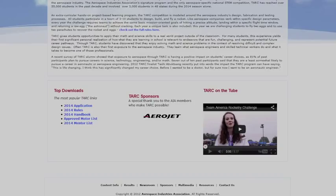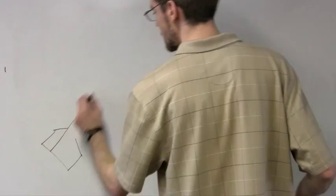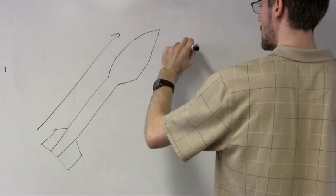Most large model rockets, including egg lofters, look something like this diagram. In aerospace engineering, it pays to be methodical in our work. When I build rockets and prepare them for launch, I like to work from bottom to top so I don't forget anything in the middle. So that's how this video will be organized.